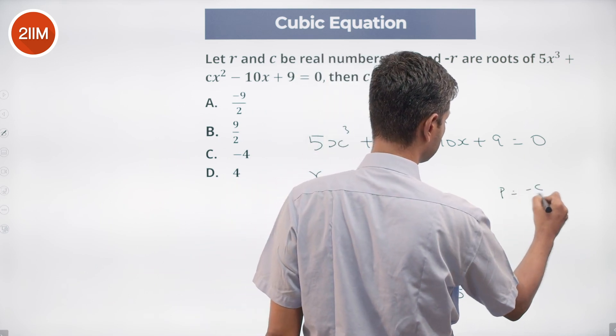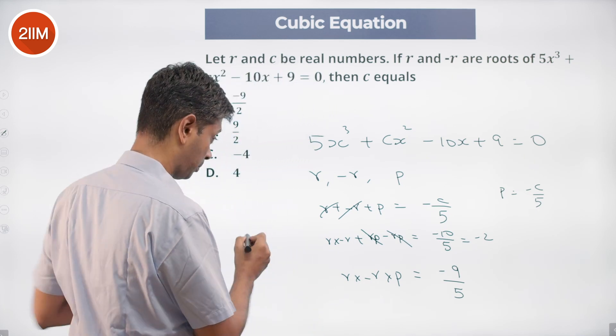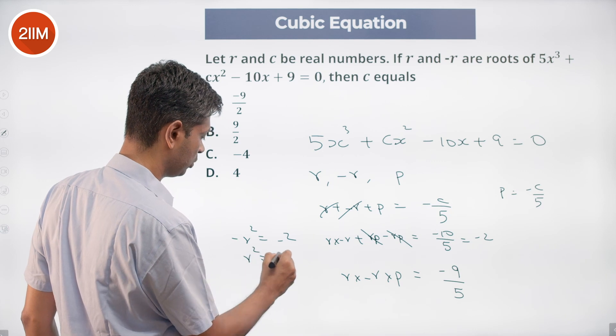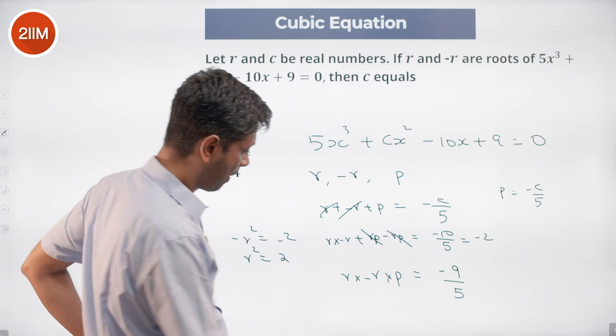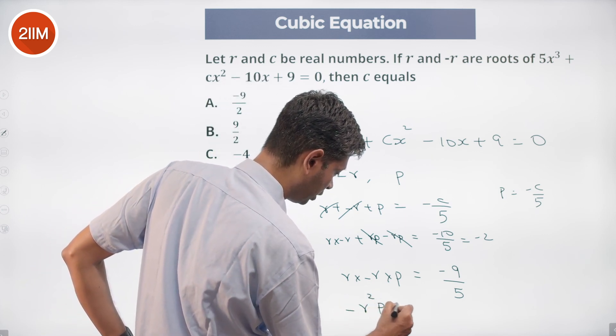rp - rp = 0, -r² = -2, r² = 2, r = √2. Here we have -r² × p = -9/5.